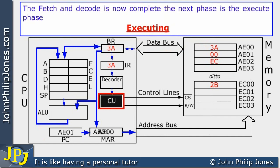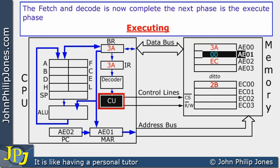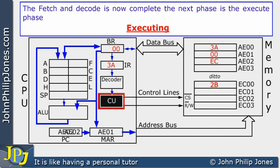The program counter transfers its contents to the memory address register and is incremented. The pulses and the pattern on the address bus go out, they select this location, and the 00 — which is part of the operand — is brought in and put in the buffer register where it stays for the moment.